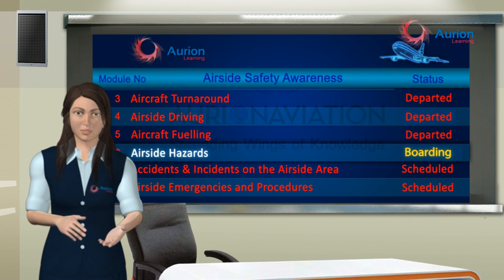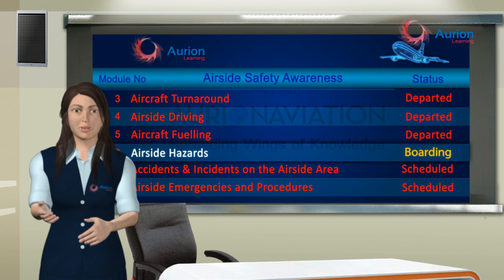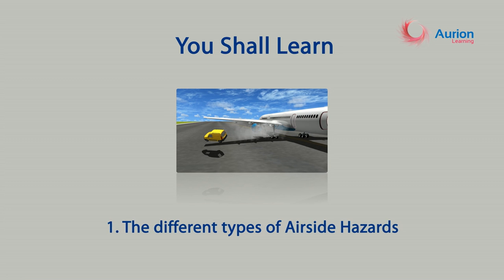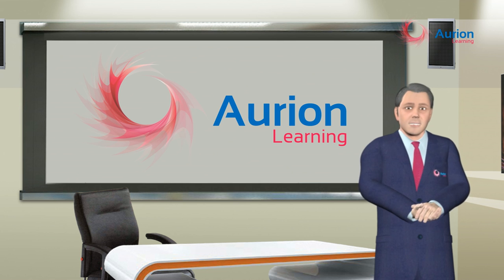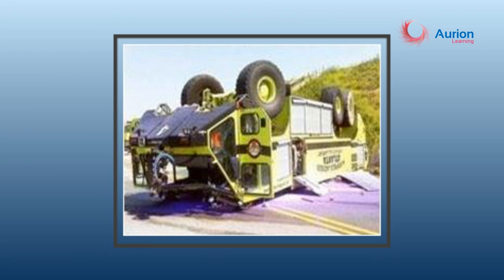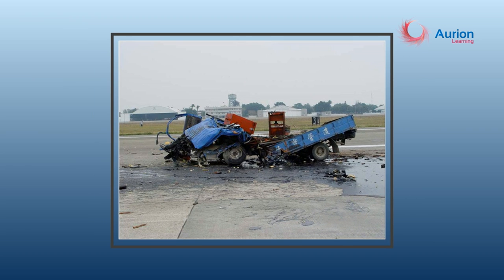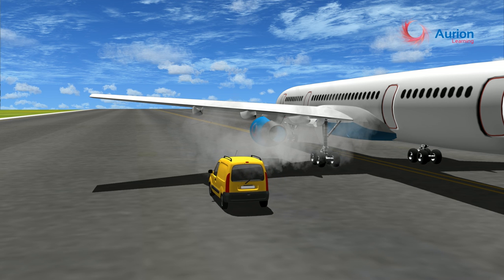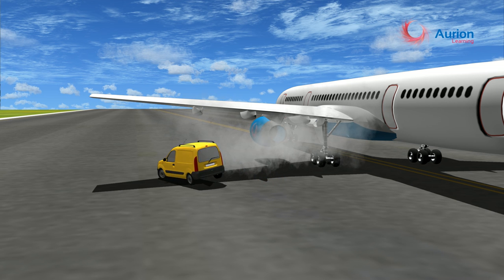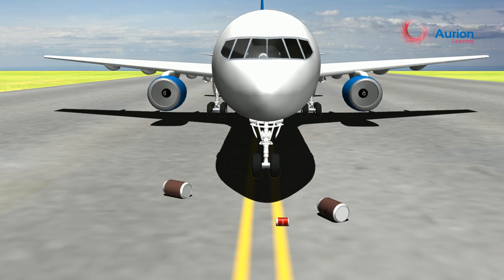Let us now begin with Module 6: Airside Hazards. In this module you shall learn about the different types of airside hazards. A hazard is a condition or situation that could result in or contribute to an undesirable outcome. While working on airside, we have to deal with aircraft hazards and other airside hazards.